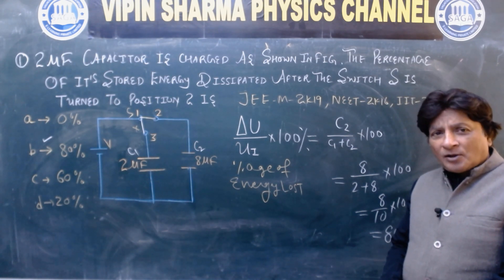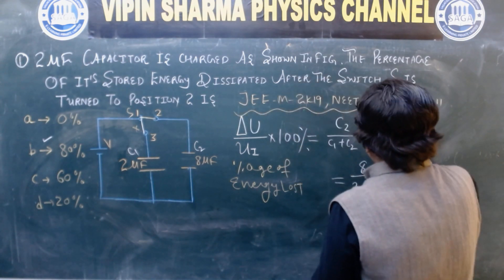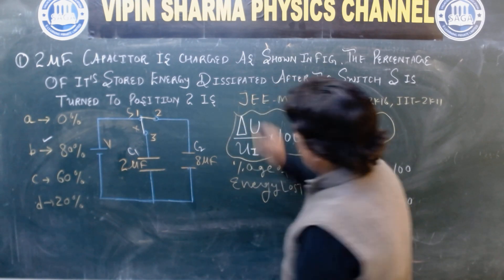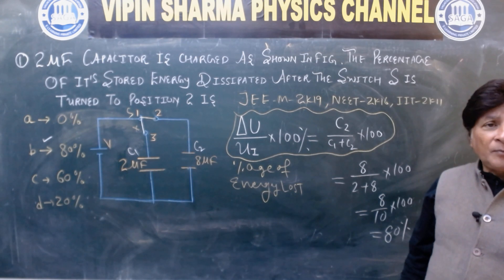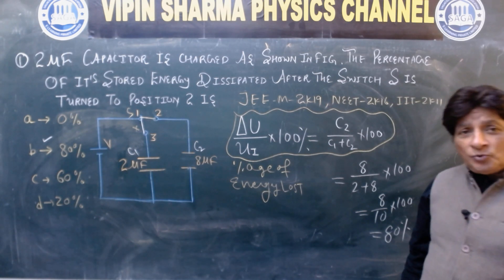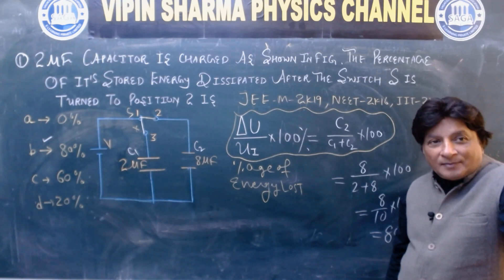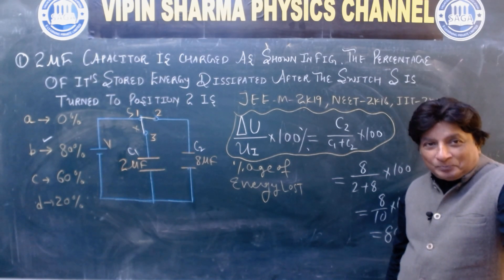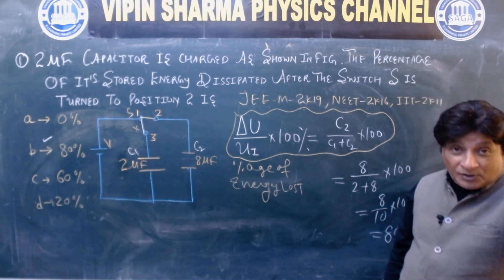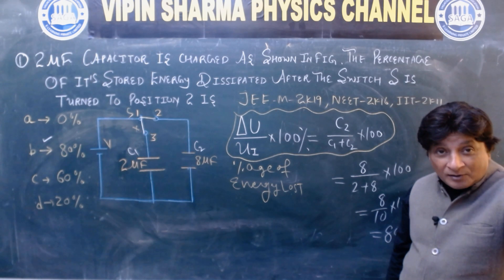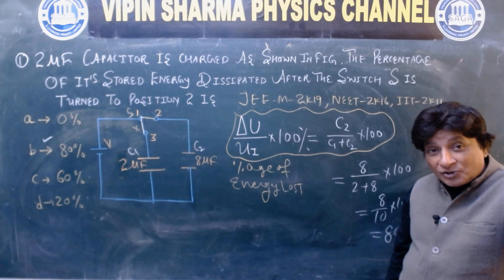This is a shortcut technique. Delta U upon Ui, that is the energy initial, into 100 equals C2 upon C1 plus C2. This question is from JEE Main 2019, and NEET 2011. After 11 and 19, this question came in 2016 NEET.